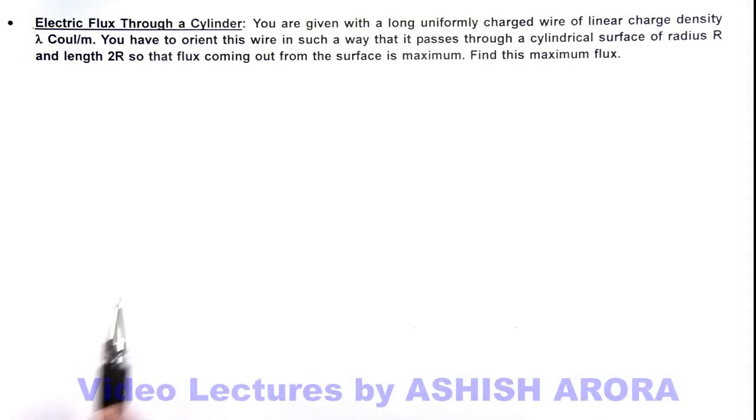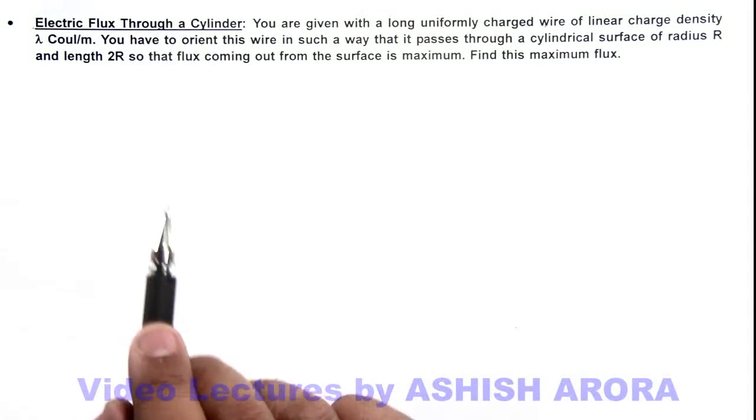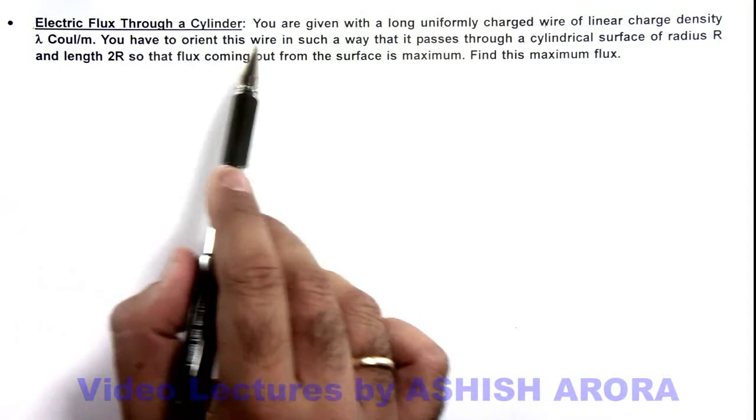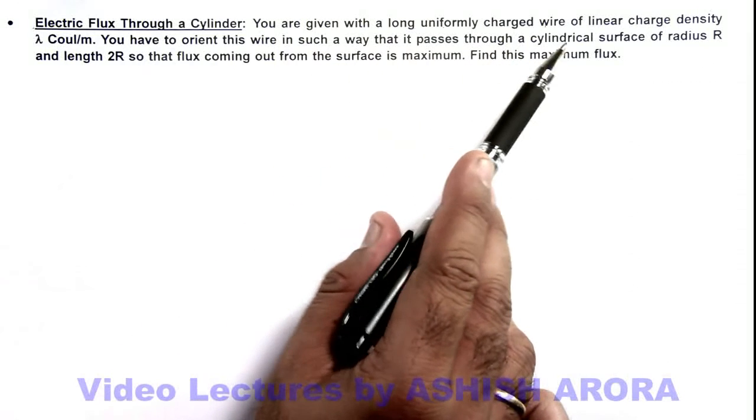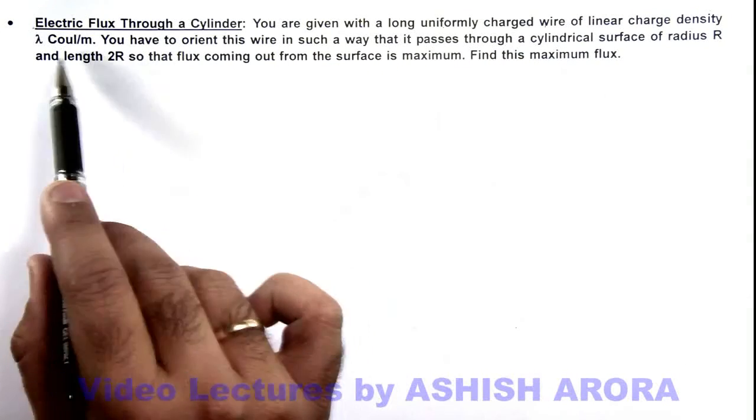This illustration is about electric flux through a cylinder. Here it is given that you are given with a long uniformly charged wire of linear charge density lambda coulomb per meter.